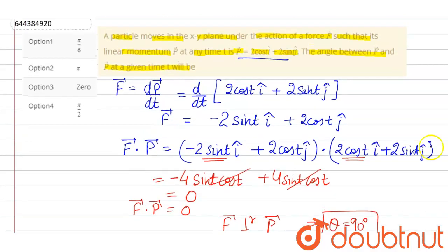So that means the correct answer of this question is option 4, pi by 2, that means theta is equal to 90 degrees. I hope that answers your question. Thank you.